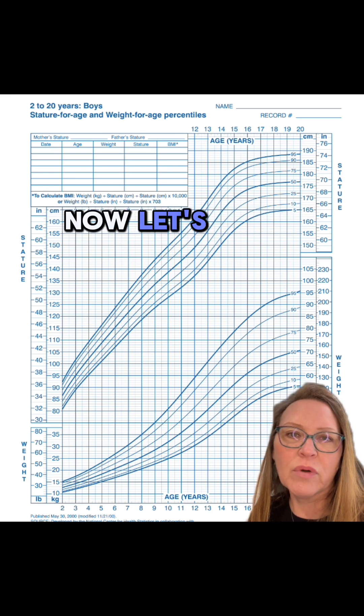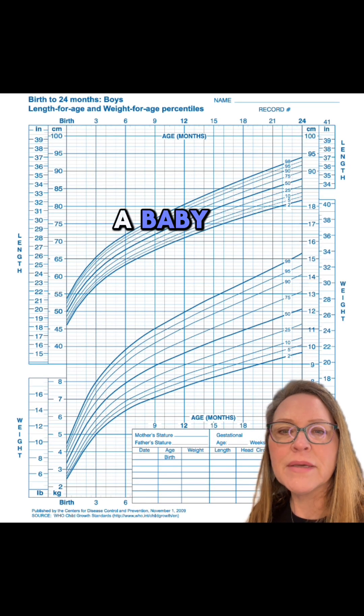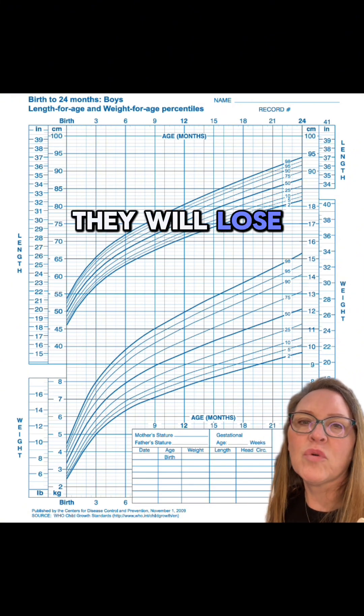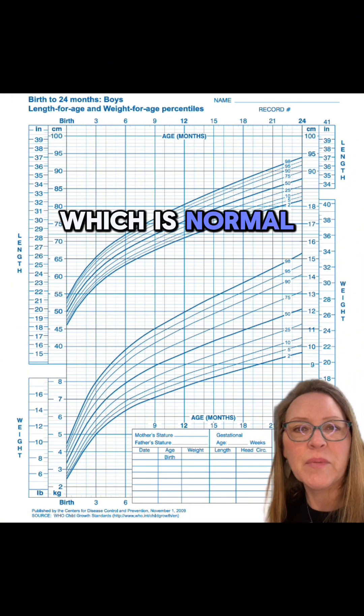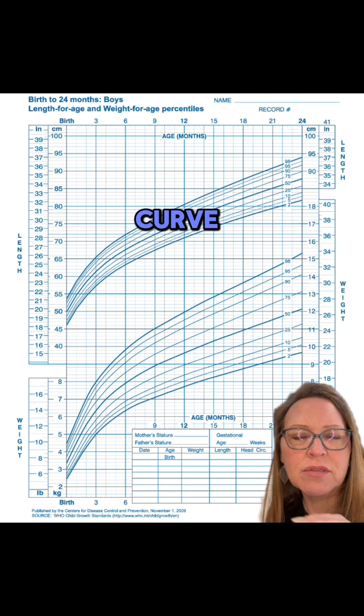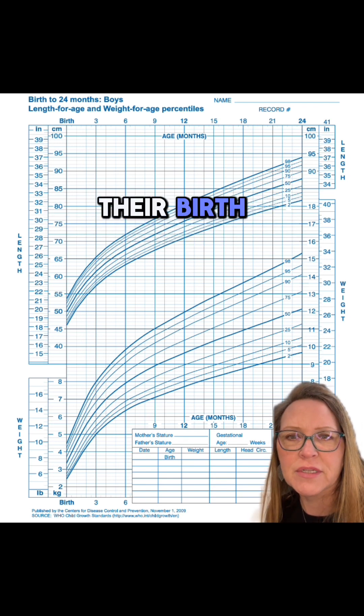Now let's look at what happens after birth. For example, if a baby is born weighing 4 kilos and loses some weight after birth, which is normal and expected, when they regain their weight, their growth may follow a curve on a slightly lower percentile than their birth percentile.